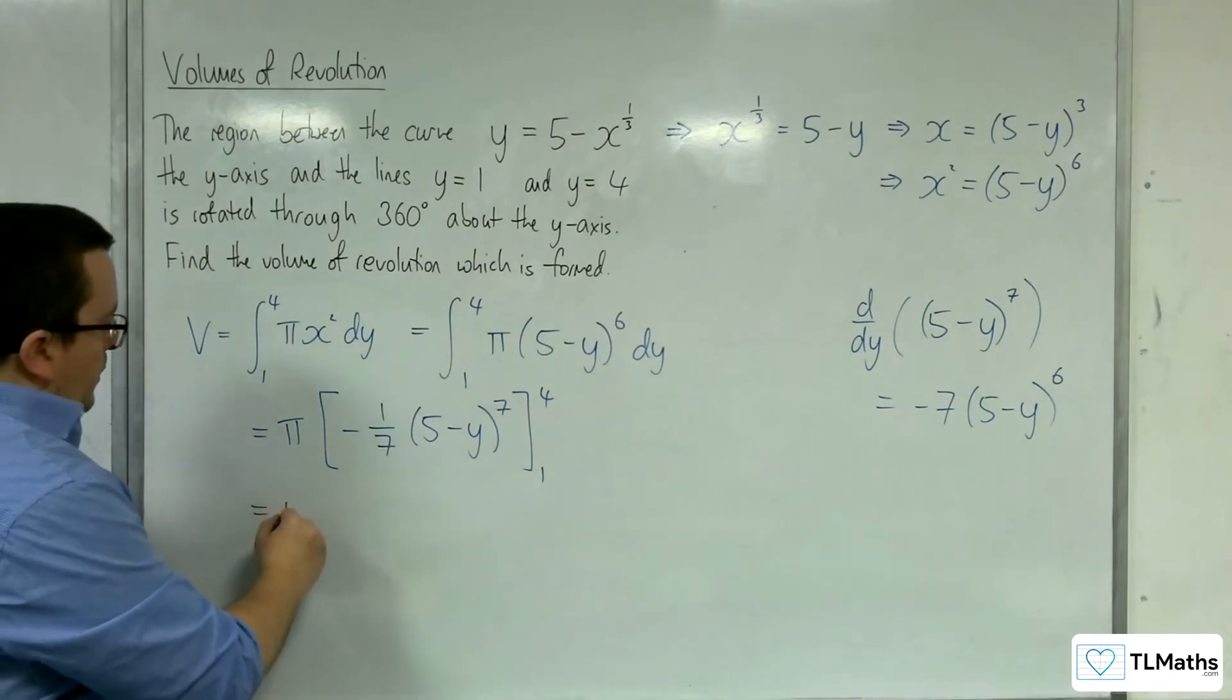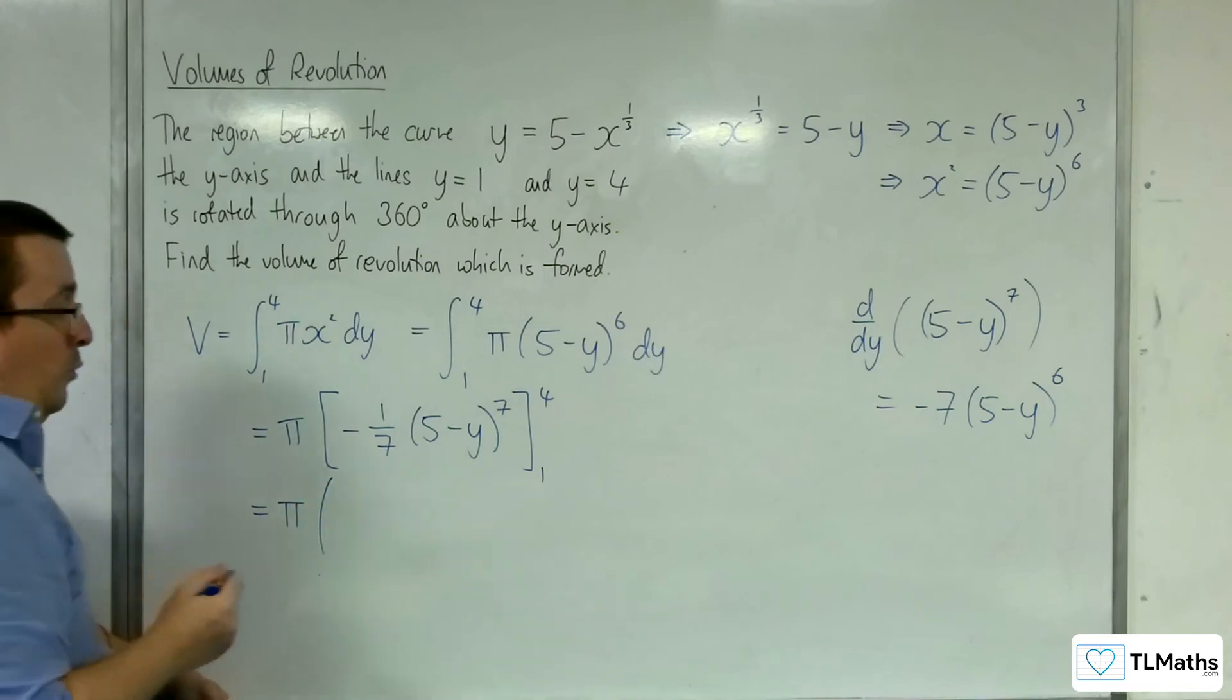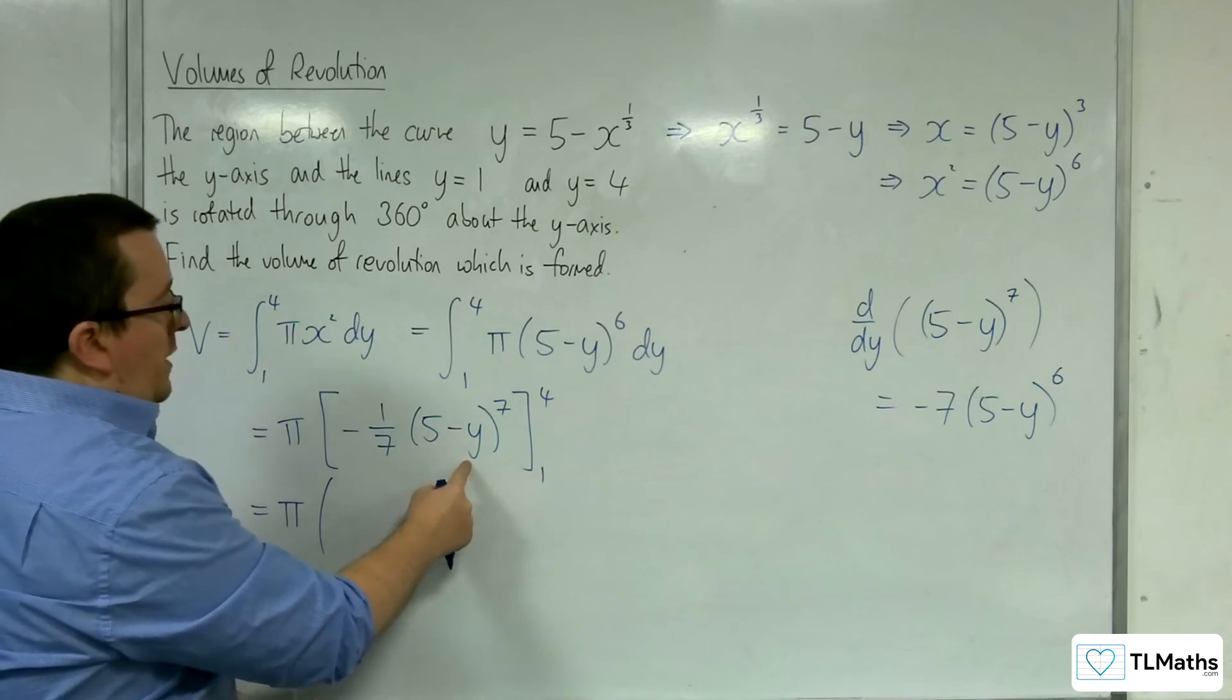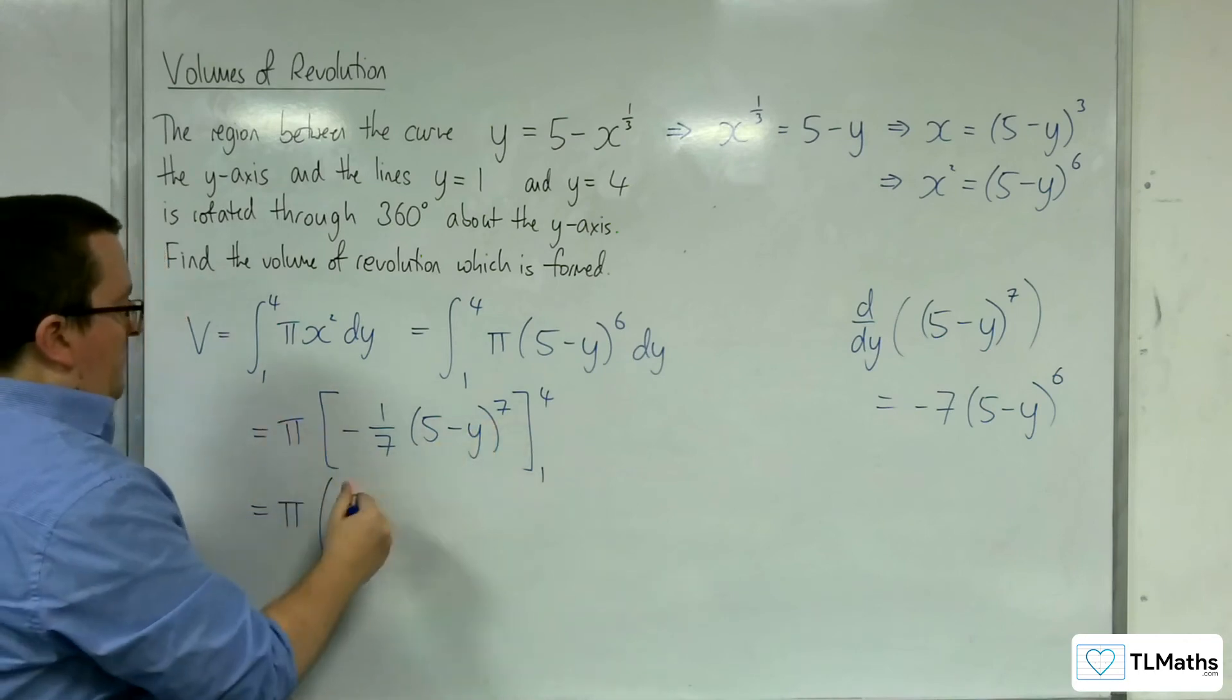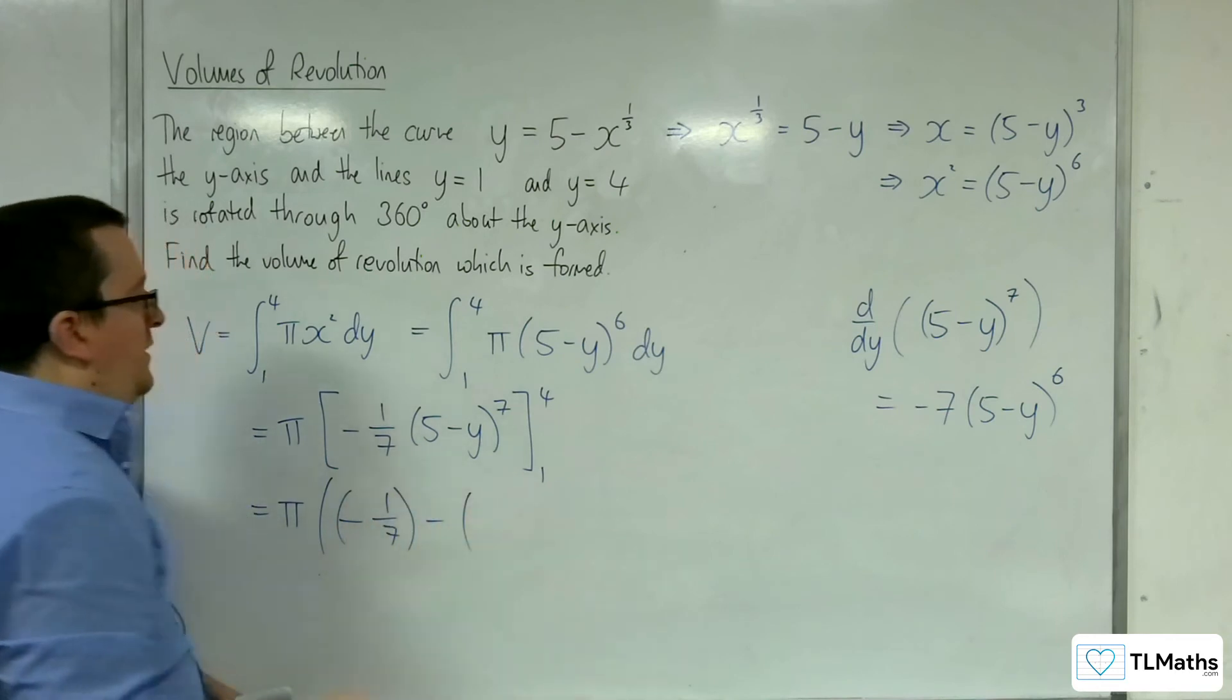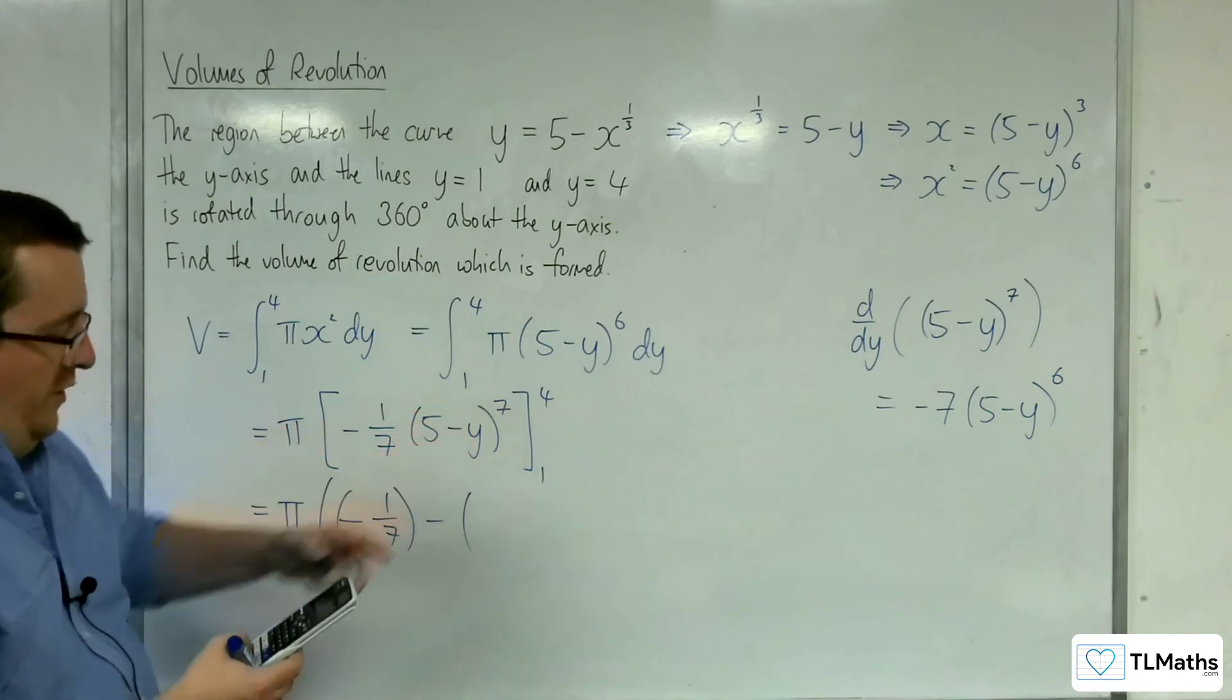So we have pi times—now I need to substitute in the 4. So we've got, well, 5 take away 4 is 1, to the power of 7 is 1. So we have just minus 1 seventh. Then substituting the 1, we're going to have minus 1 seventh times 4 to the power of 7.